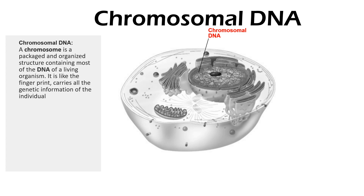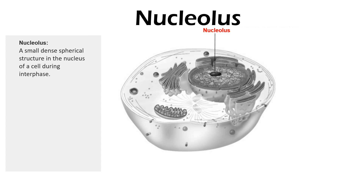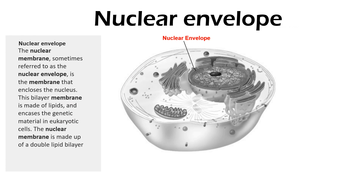Chromosomal DNA is like a fingerprint and carries all the genetic information of the individual. The nucleolus is a small, dense, spherical structure in the nucleus of a cell during interphase. The nuclear envelope — also called the nuclear membrane — is the membrane that encloses the nucleus.